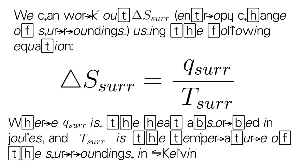We can calculate the entropy change of the surroundings using the following equation. Entropy change of the surroundings equals heat absorbed by the surroundings divided by the temperature of the surroundings.